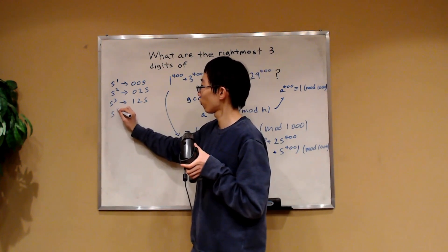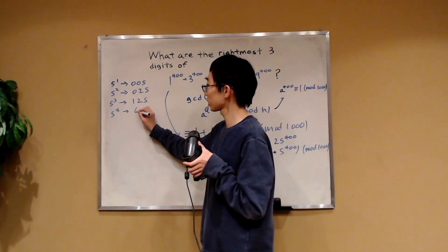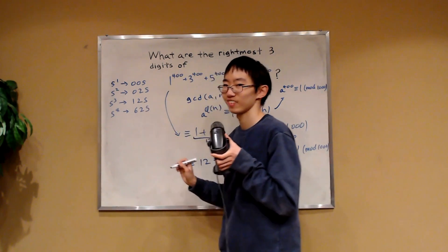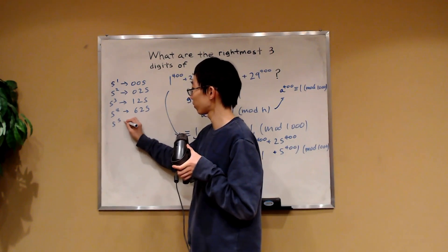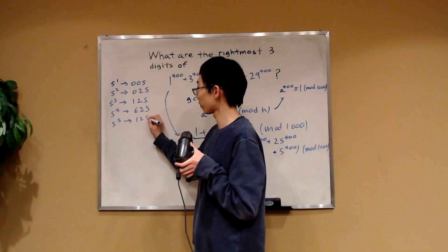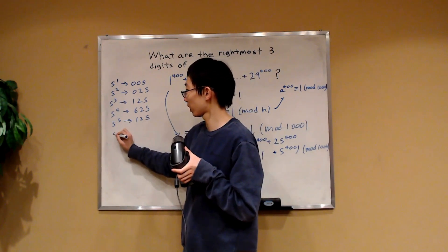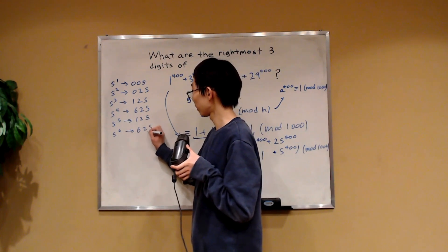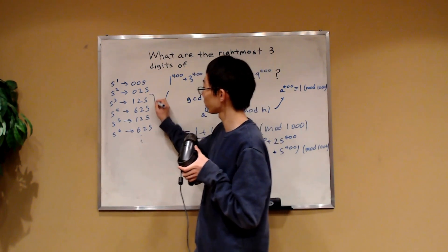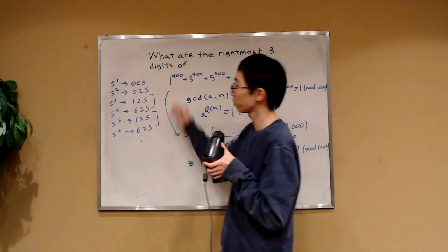If you were to do 5 to the 5 it ends in 125, if you do 5 to the 6 it ends in 625 and you can see there's a pattern with the 125s and 625s they repeat. In fact for the exponent being greater than 2 we see that it repeats and if the exponent is odd it's going to be 125 if it's even then it's 625.